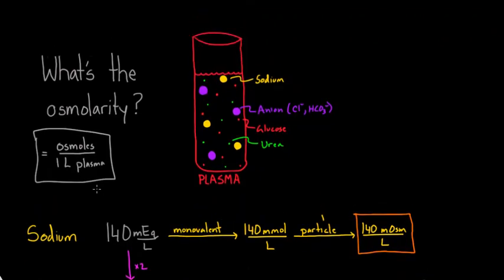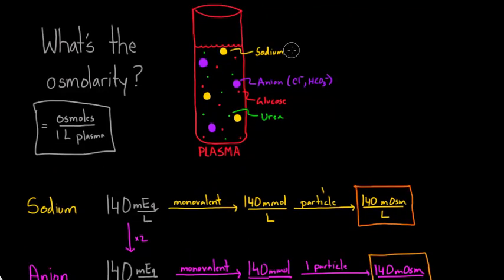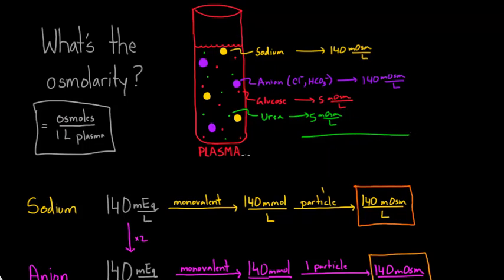So going back to the top, we have sodium, which turned out to be a total of 140 milliosmoles per liter. And then for our anion, we had 140 milliosmoles per liter. And then for our glucose, we had 5 milliosmoles per liter. And for our urea, we had 5 milliosmoles per liter. So adding it all up, our total comes to 140 times 2 plus 10. So if I do my math correctly, I think that's 290 milliosmoles per liter. That's the answer to our osmolarity. Our total osmolarity in the plasma is 290 milliosmoles per liter.